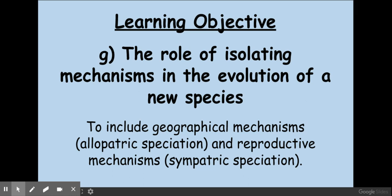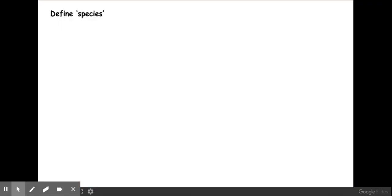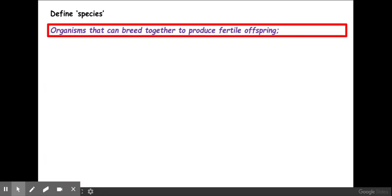Welcome biologists to this session where we're going to be looking at different mechanisms involved in evolution. First of all we need to know what a species is. A species is a group of organisms that can breed together to produce fertile offspring.